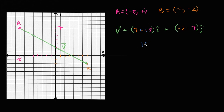So we get 15i plus — and negative two minus seven is negative nine — so I could say plus negative nine J, or just minus nine J. That's one way to write our vector.